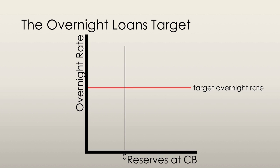Let's say that the central bank puts its target overnight loans rate at some arbitrary number. It now needs to manipulate the market in order to achieve this target. The central bank uses two other interest rates to do this. The bank rate is the rate that the central bank charges big banks on overnight loans, always set at 0.25% above the target overnight rate. The bank rate acts like a maximum overnight loans rate — no bank would charge higher than the bank rate because no bank would borrow from it if the central bank's rate is lower. In essence, the bank rate acts as a cap, or a maximum, that the overnight loans rate can be at any given time.